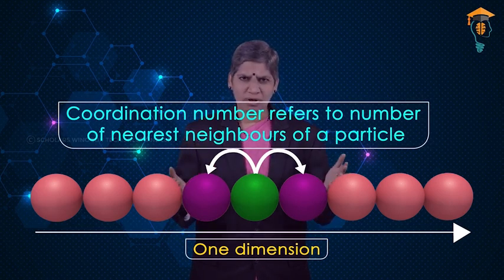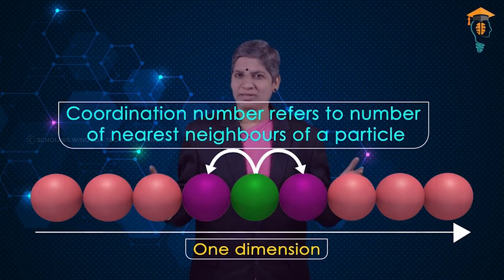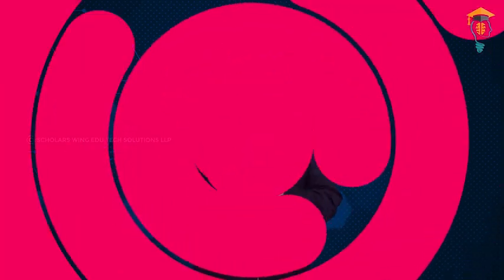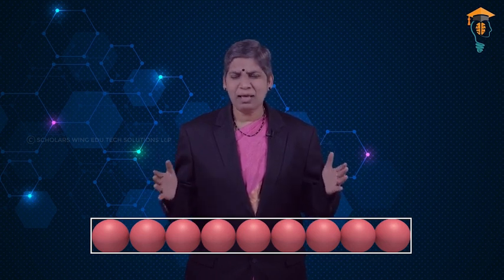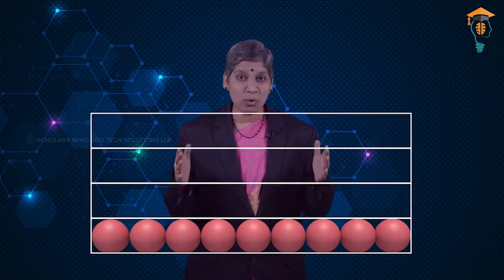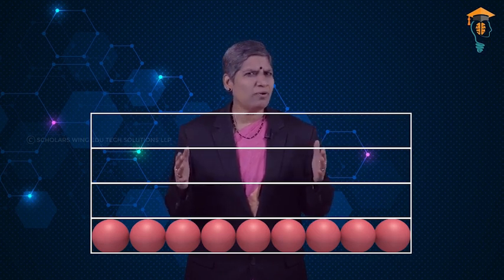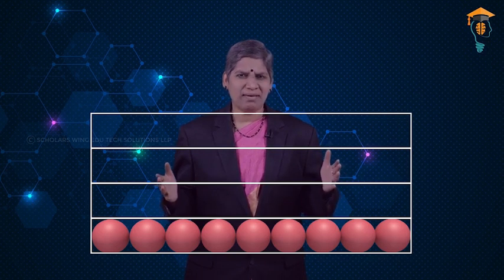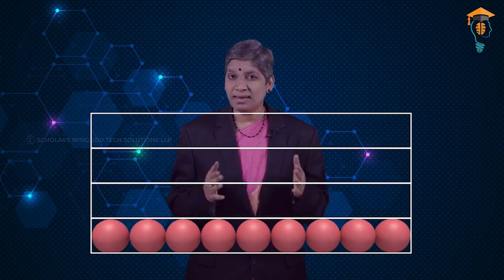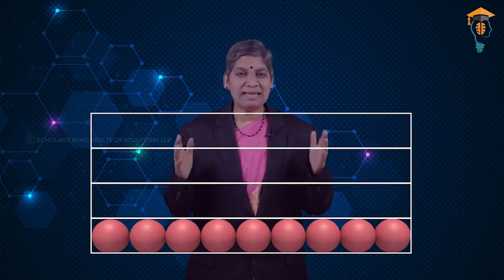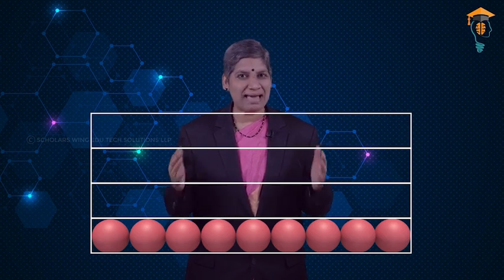We just now saw the packing in one dimension. So now let us see how packing happens in two dimensions. Already we have a single row of close-packed spheres in one dimension. Now in order to get a two-dimensional close-packed structure, many such rows have to be stacked over each other. This stacking can happen in two different ways. Let us look at these ways one after another.